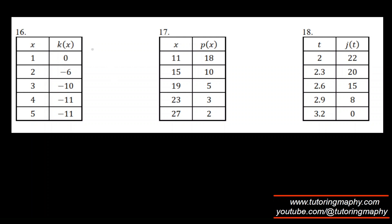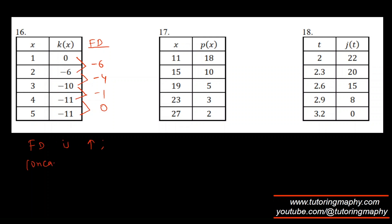For the next batch of concavity questions, x is again increasing by the same value throughout. First differences for the first table: −6, −4, −1, 0. The values are increasing toward 0 — note that −4 is greater than −6. Since the first difference is increasing, this function is concave up.